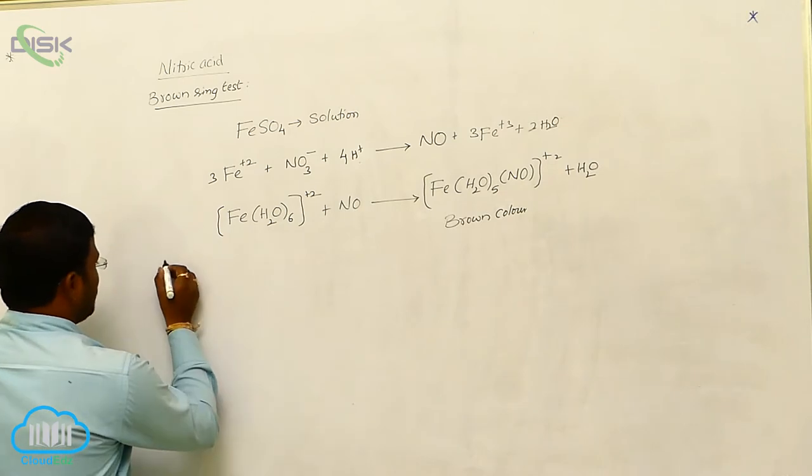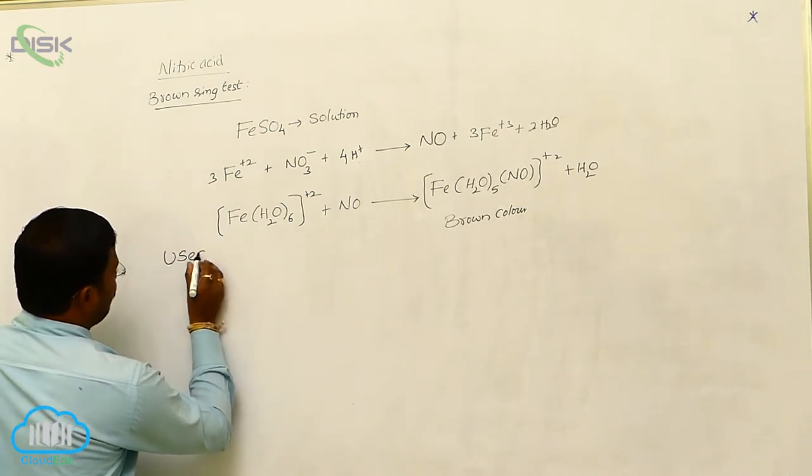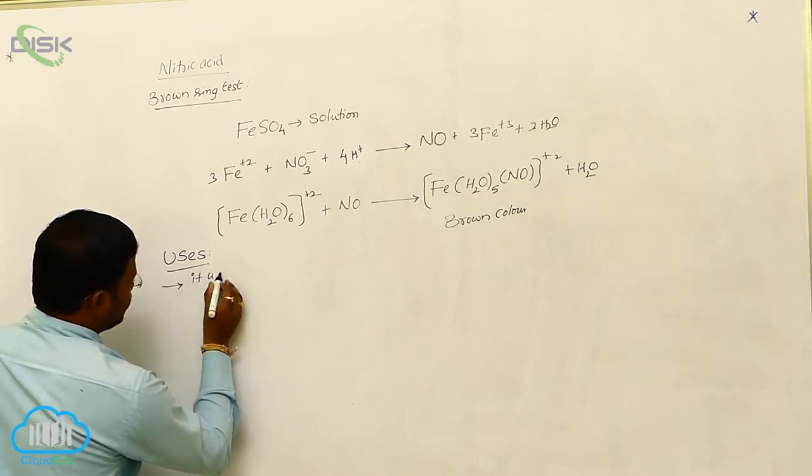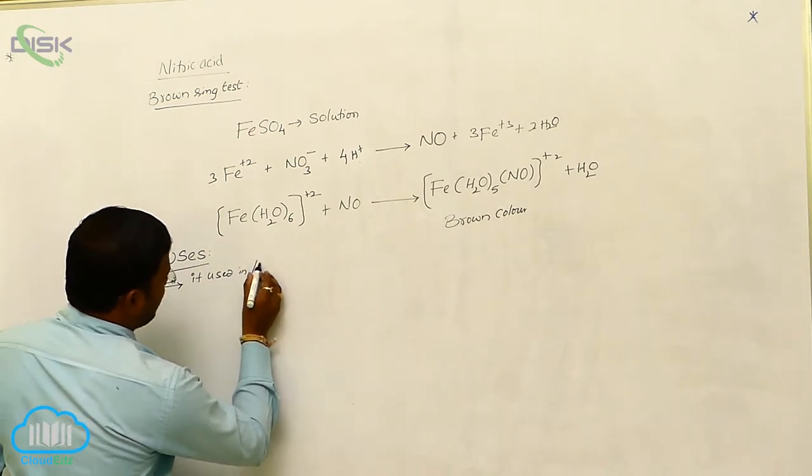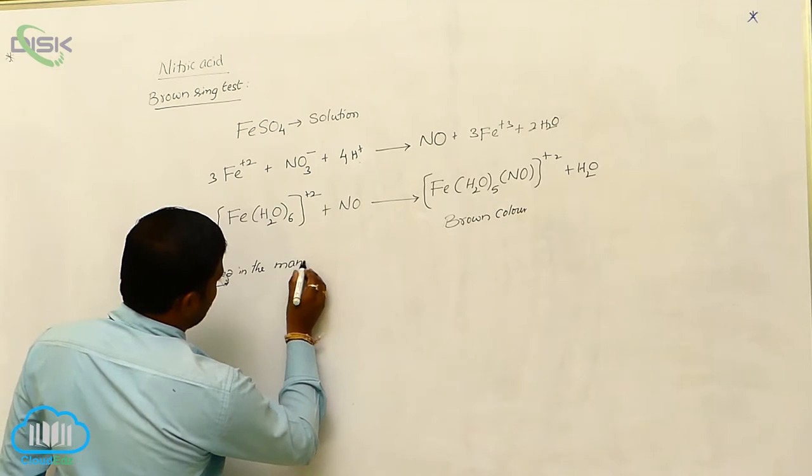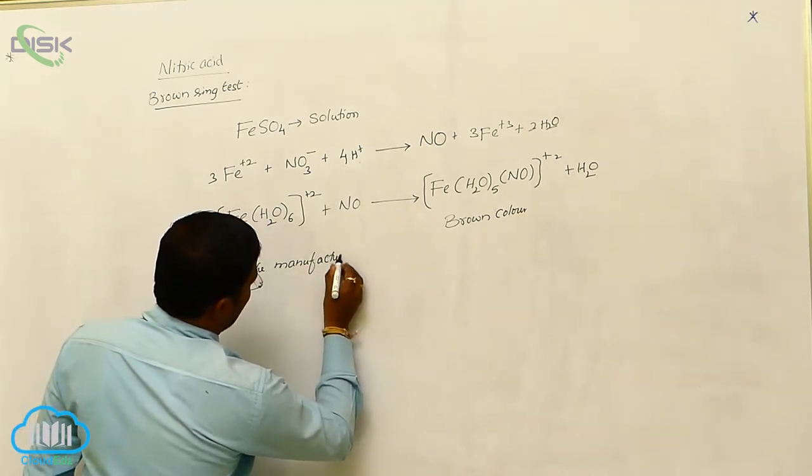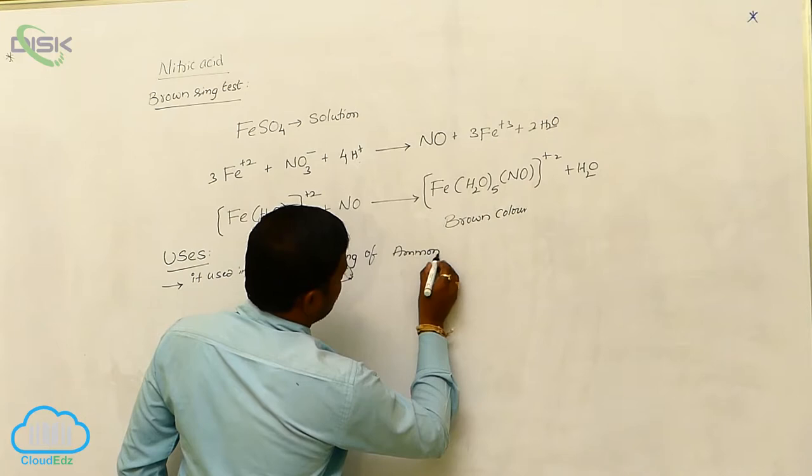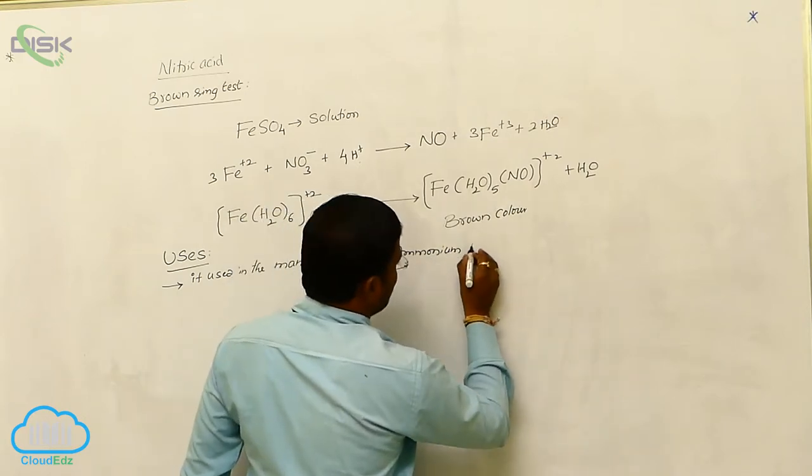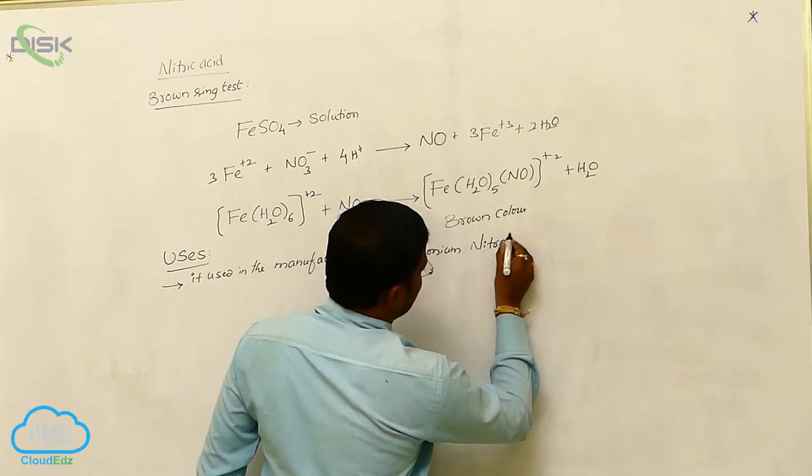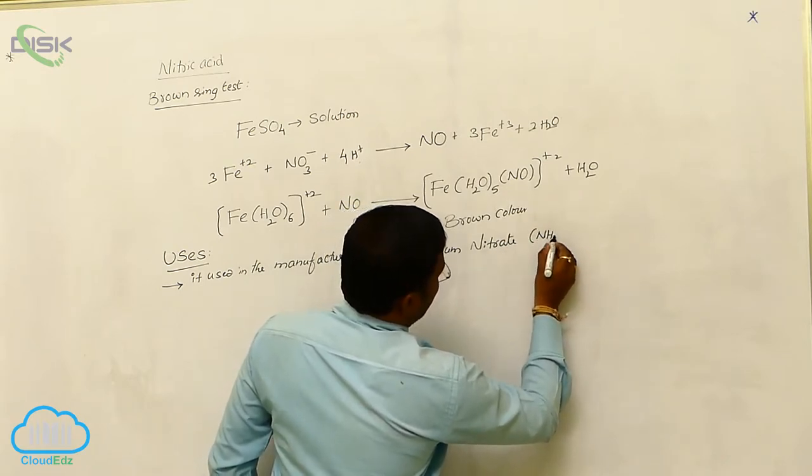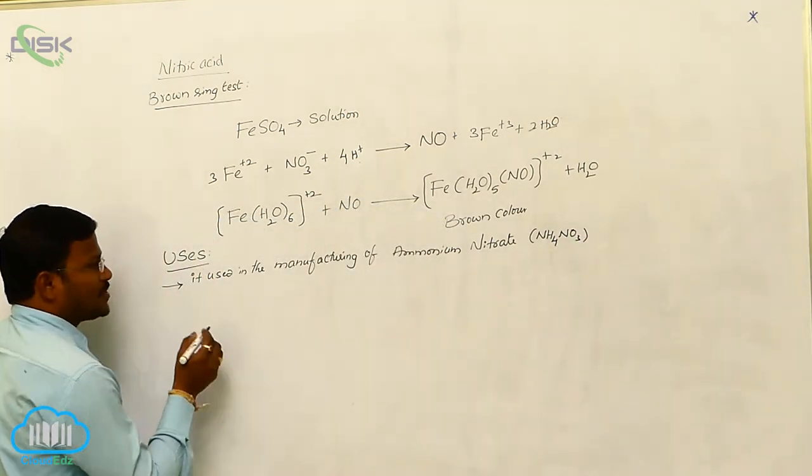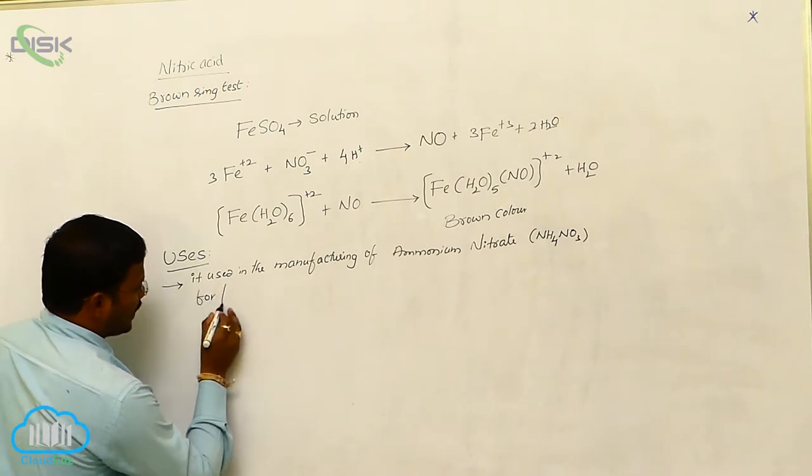Let us explain the uses of nitric acid. The nitric acid is used in the manufacturing of ammonium nitrate. Actually, the ammonium nitrate is manufactured for fertilizer purpose.